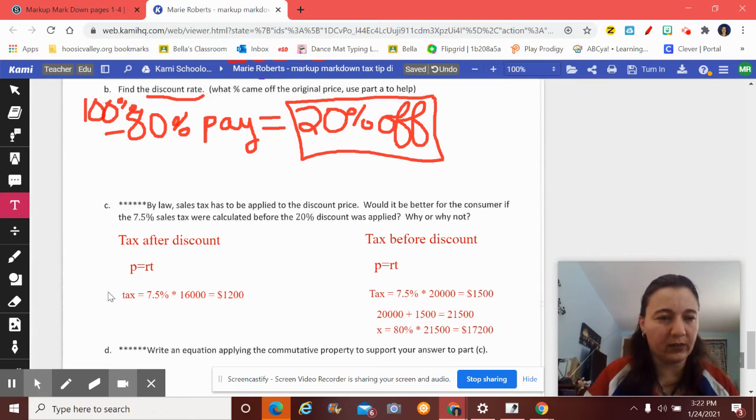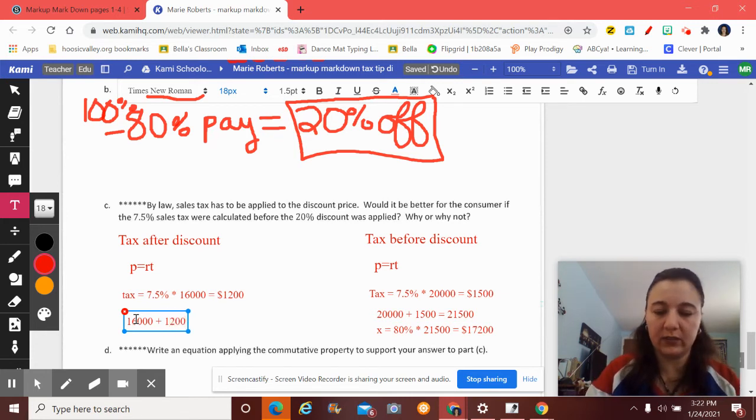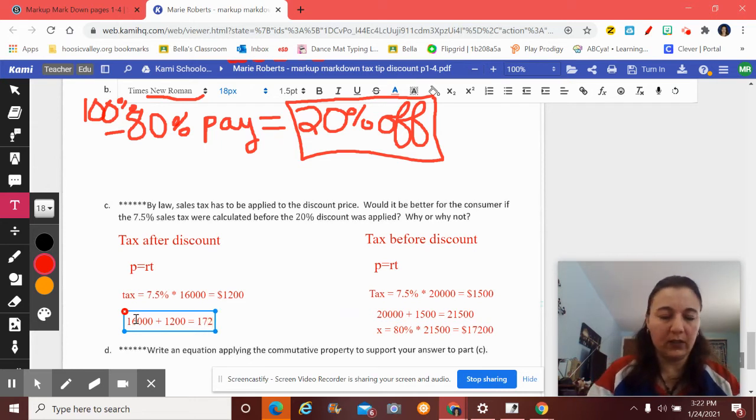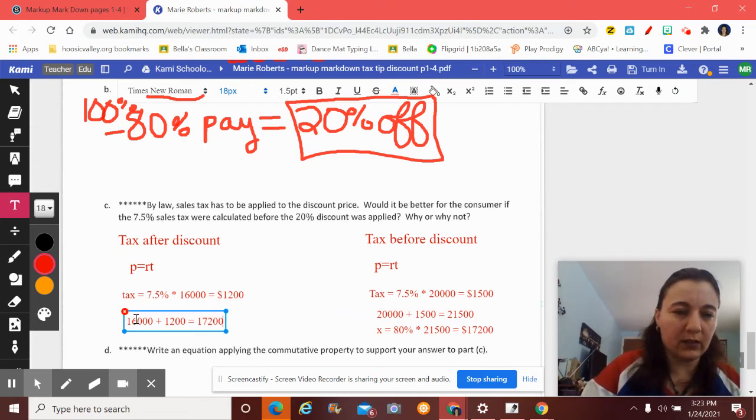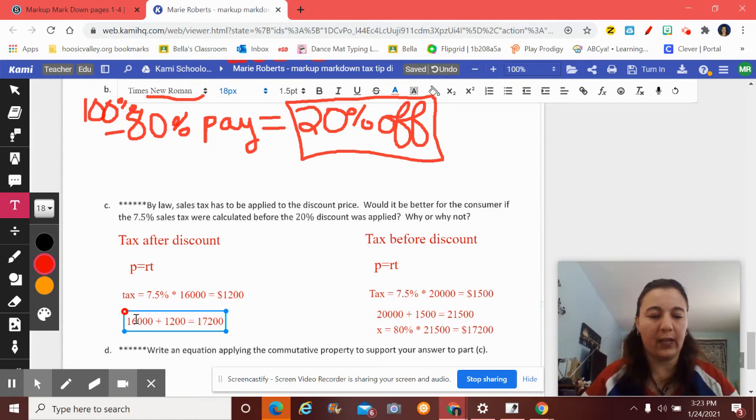Over here, we didn't do the final price. So let me go back and do the final price. It was $16,000 after the discount, and I still have to pay tax, which is based on the discount. And it comes out to be $17,200. It actually comes out the same amount.